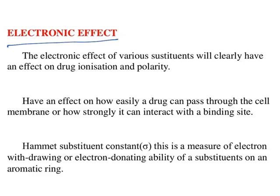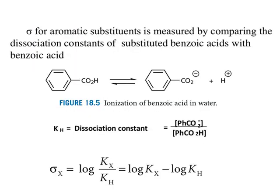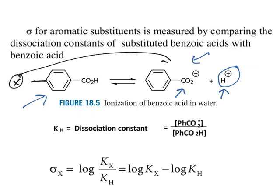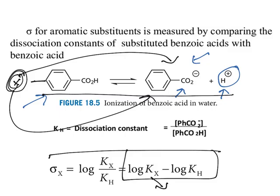Now, electronic effects. Electronic effects give the drug ionization and polarity — both important for crossing the cell membrane and binding with the receptor. These electronic constants are known as the Hammett substituent constant (sigma). This is a measure of the electron withdrawing or electron donating ability of a substituent on an aromatic ring — it works only with aromatic rings. Taking benzoic acid as an example, various substituents are applied, and the equation uses log Kx with substitution versus without substitution.